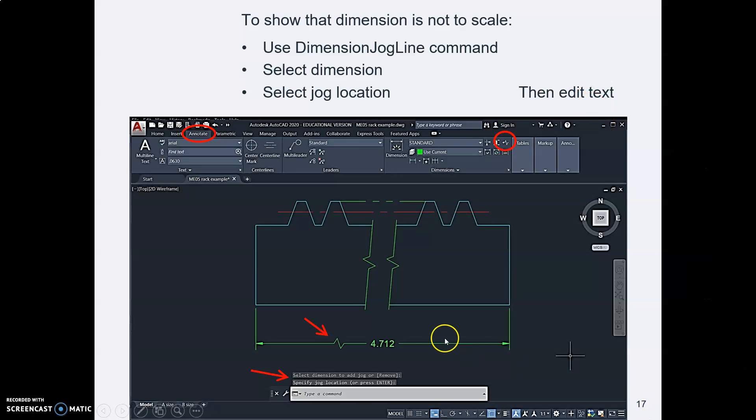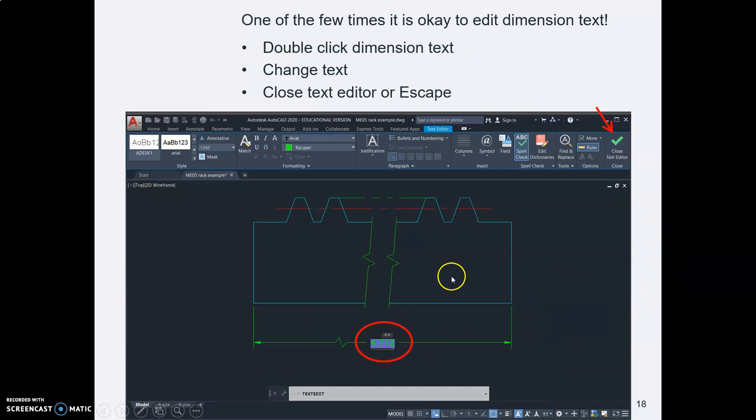Then, as a last step, edit the dimension text. Change that text. And you can open the text editor by double clicking on the dimension text. Change it and then close it.